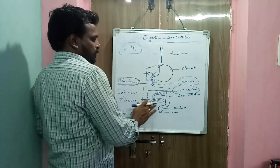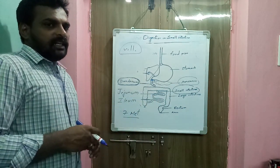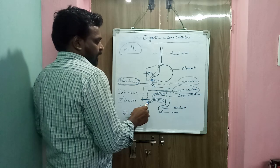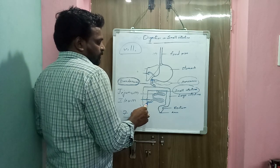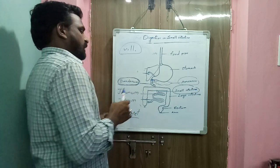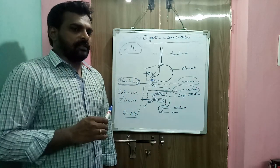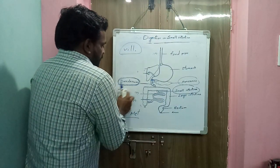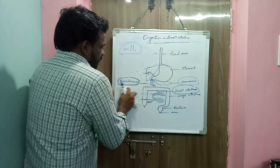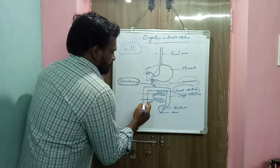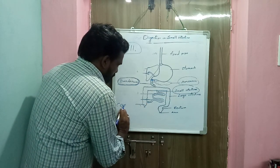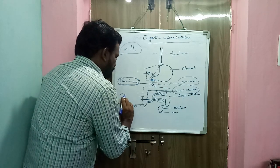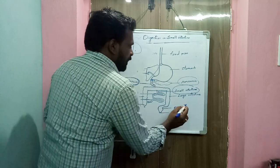After digestion in the small intestine, unwanted and undigested food materials enter into the large intestine. Digestion does not take place in the large intestine. The large intestine is divided into three parts: cecum, colon, and rectum.